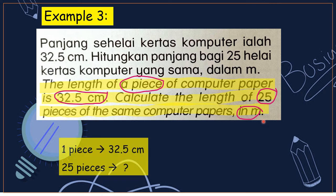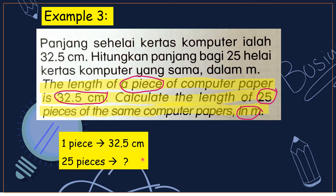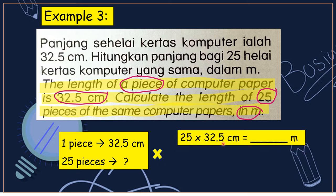I simplify the information like this: one piece of paper is 32.5 cm. To find 25 pieces, which operation are we going to use? Yes, multiply. So 25 times 32.5 cm, and the final answer is in meter. For this one, you multiply first — your answer will be in cm. After that, you convert to meter. One meter is equal to 100 cm, so if going from cm to meter, you divide by 100.